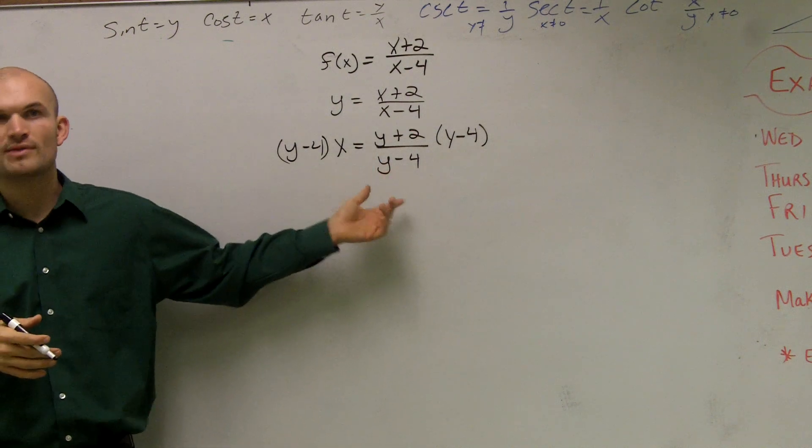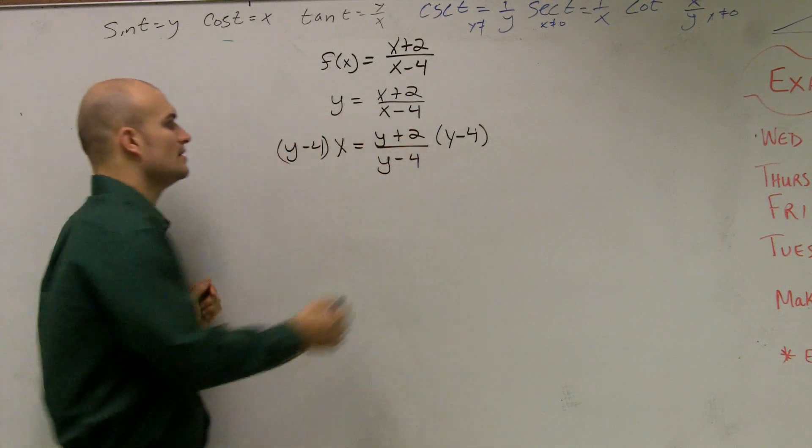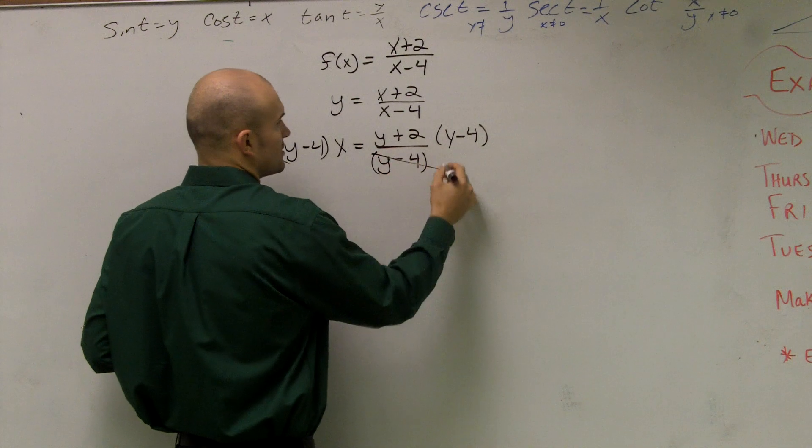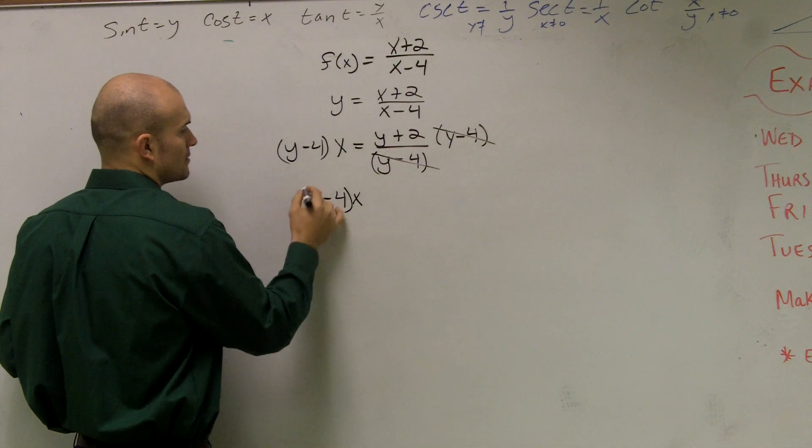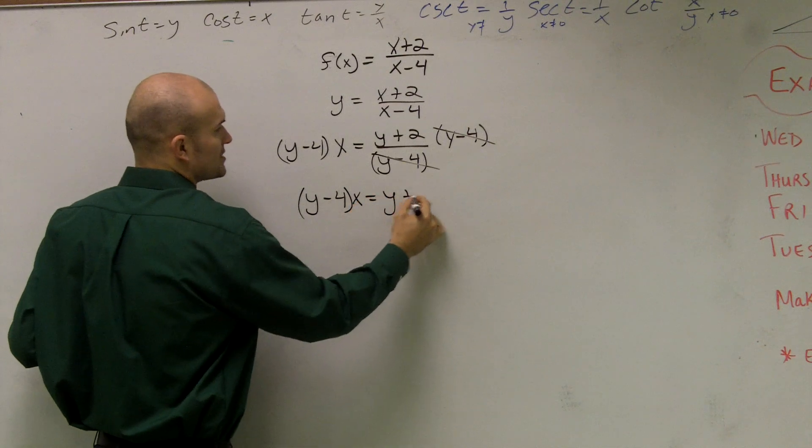Okay, just like if it was a fraction and it was 4 on the bottom, you multiply by 4, right? You get rid of it. So now what we're saying is those are going to cancel out. So I'm left with y minus 4, x equals y plus 2.